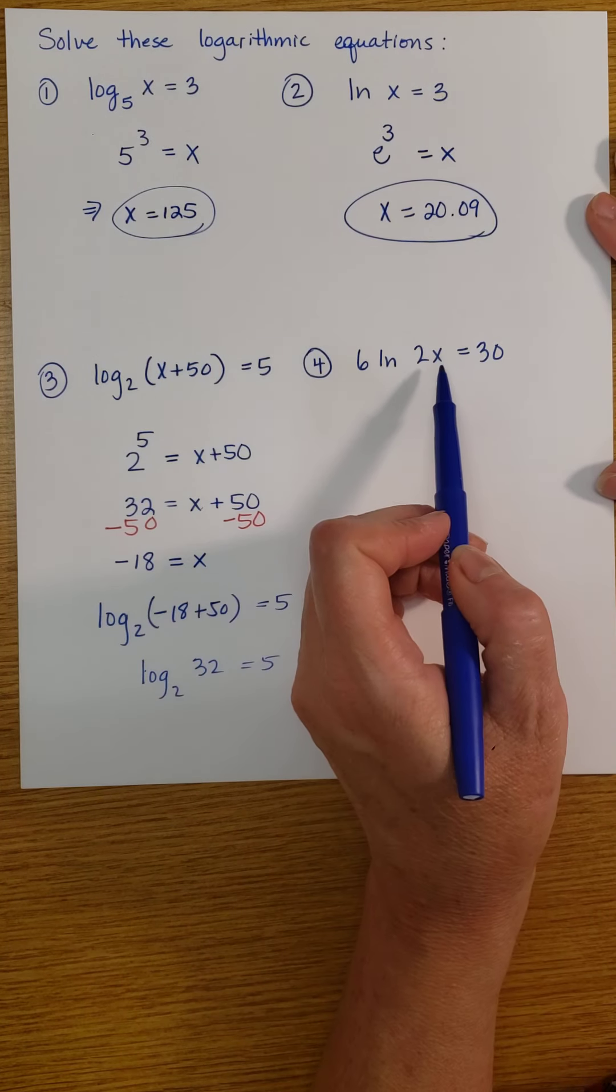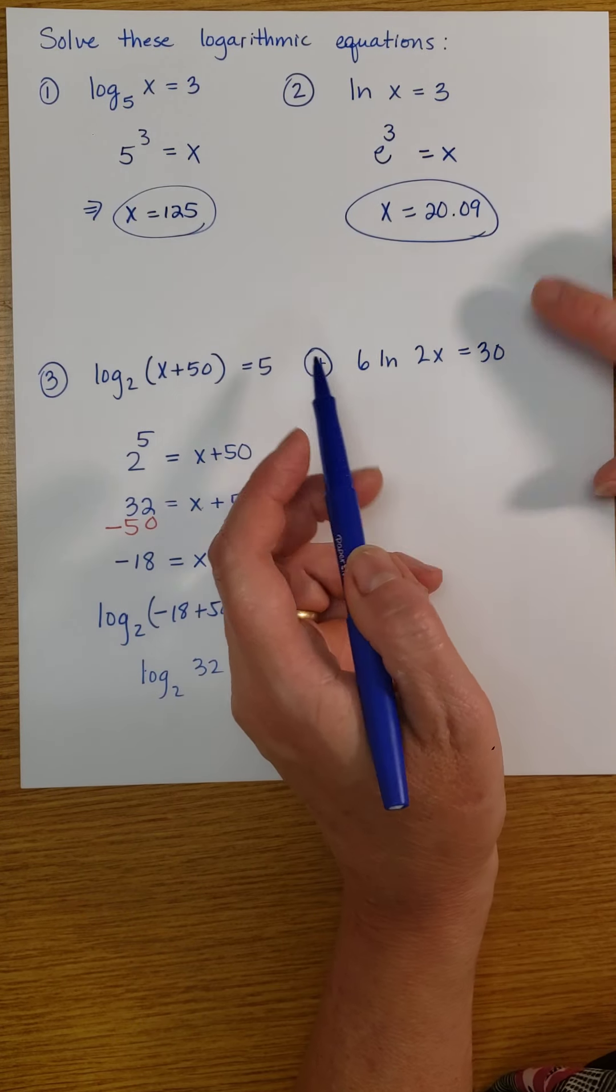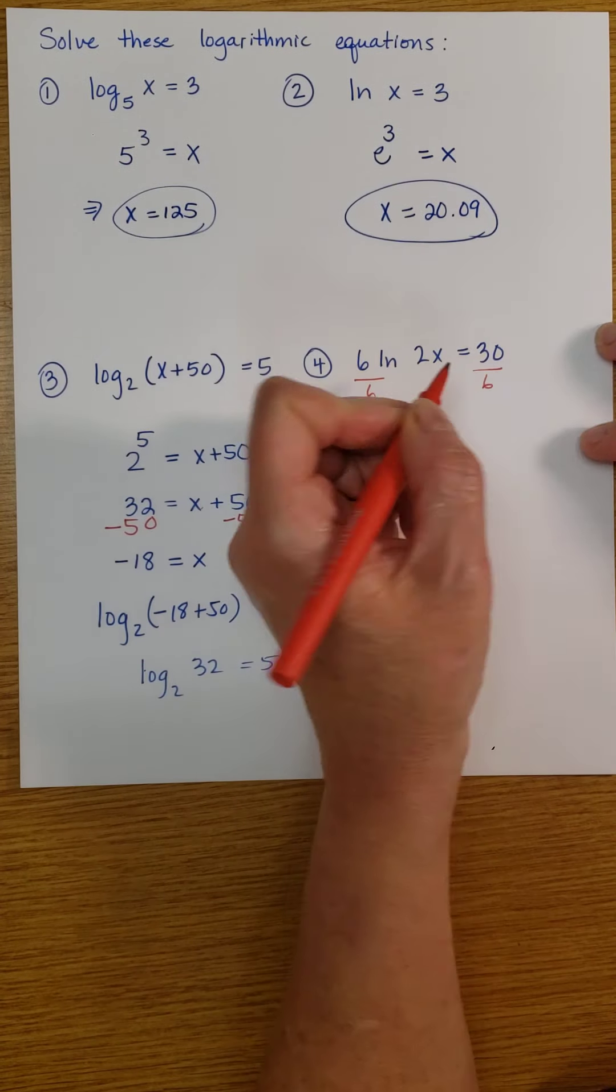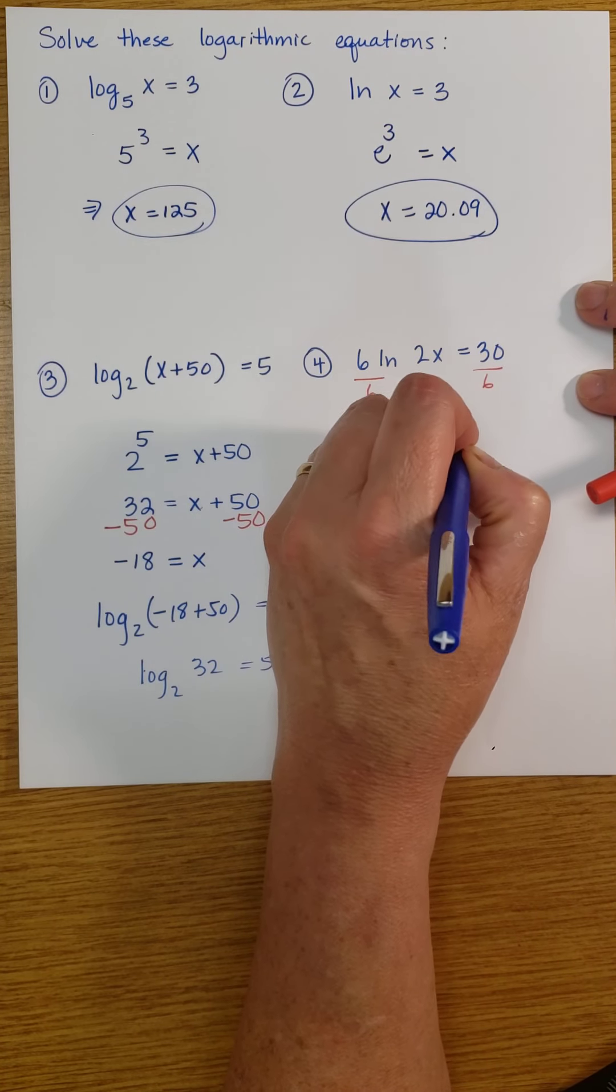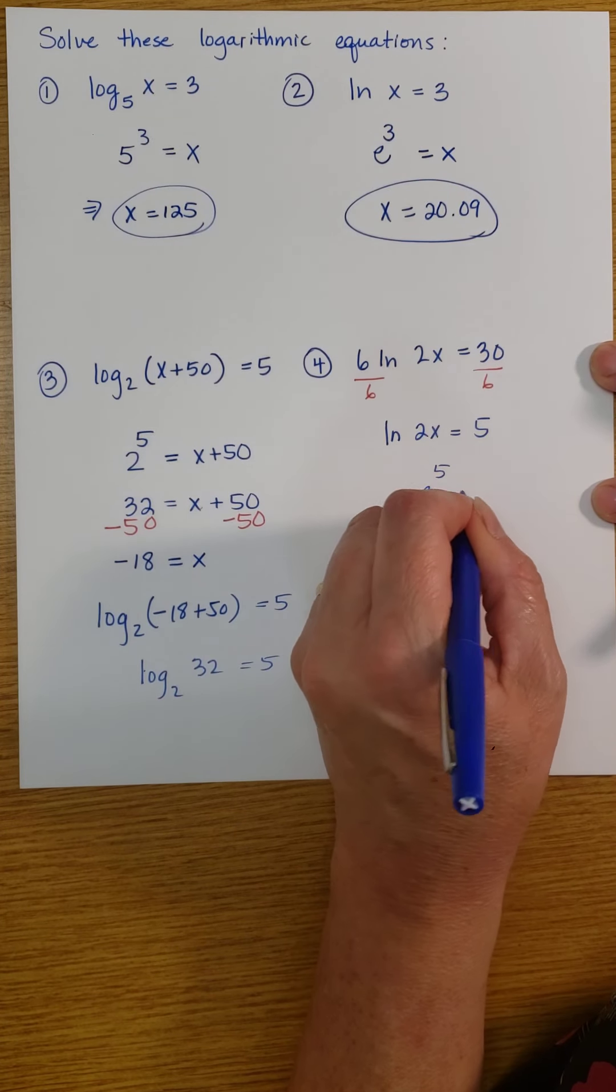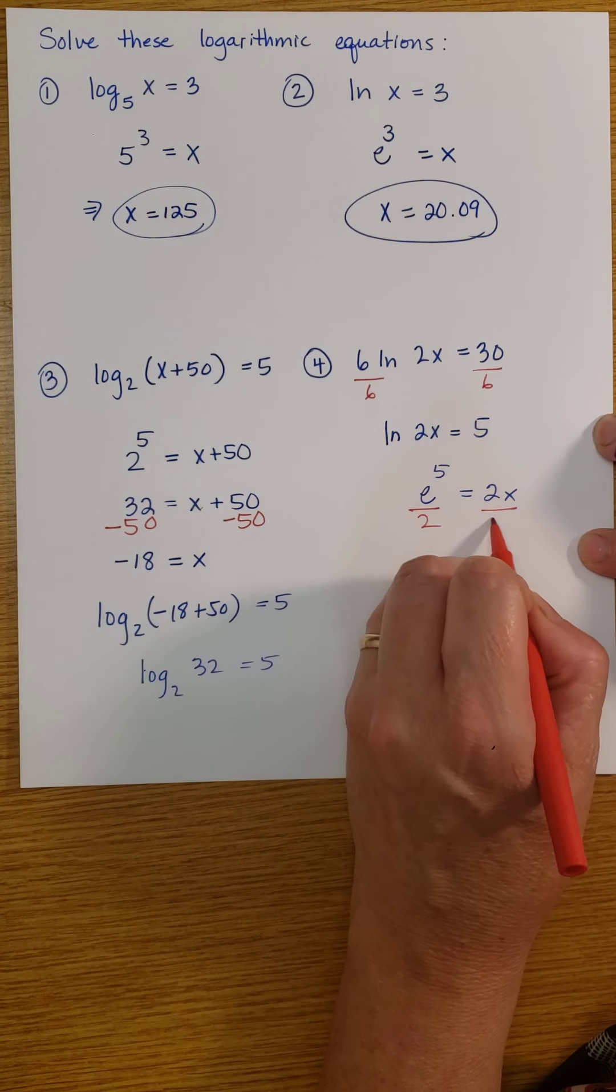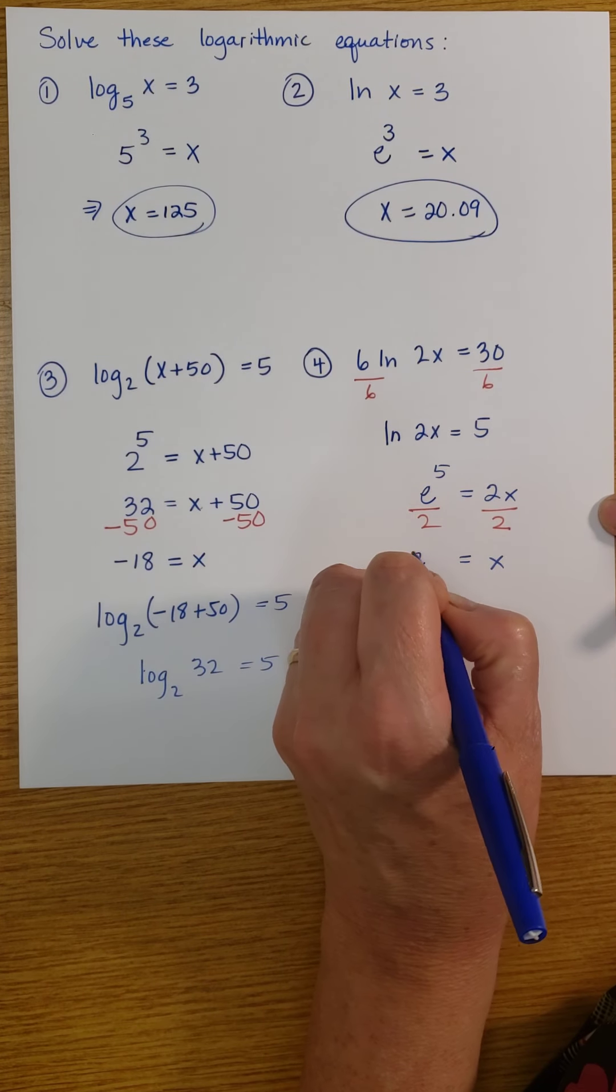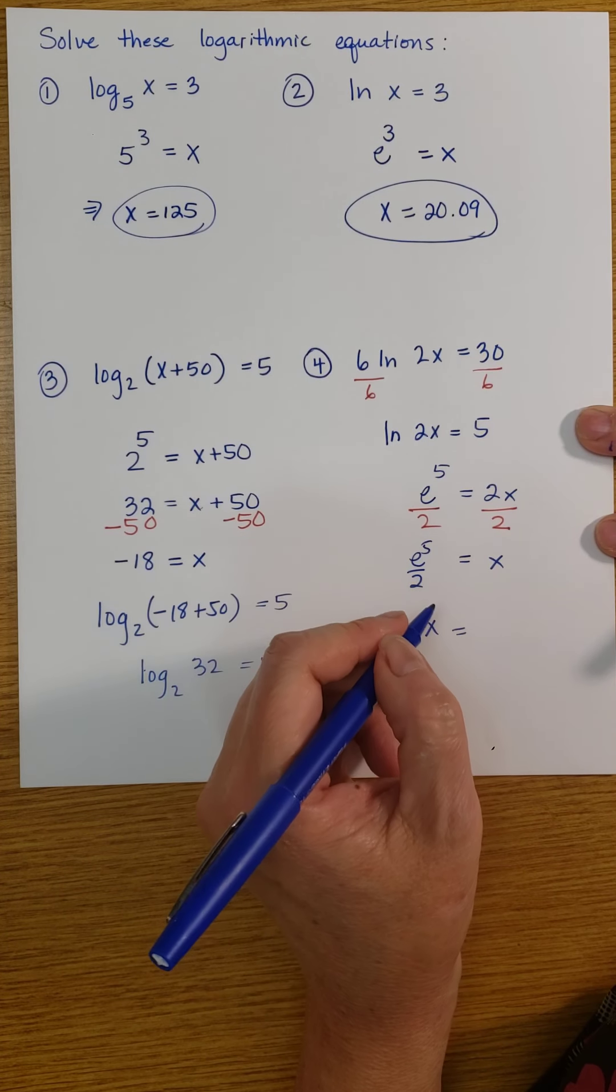Finally, we're going to be isolating the x here, and we're going to put this in exponential form. But I need to put that 6 over with the 30. So I'm going to divide both sides here by 6. And that's going to give me the natural log of 2x equals 5. Now, putting it in exponential form, I have e to the 5th power is 2x. I divide both sides by 2. And I have x equal to e to the 5th power over 2. Plugging that into my calculator, I get 74.21.